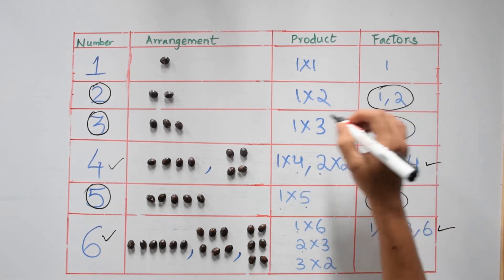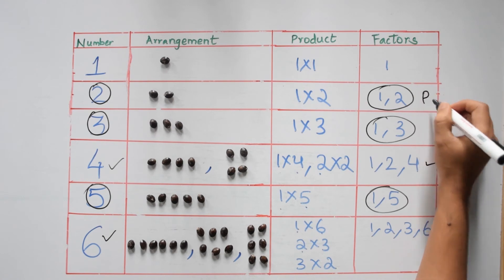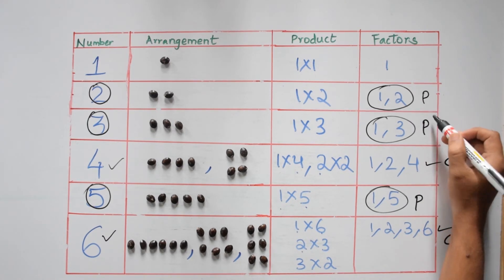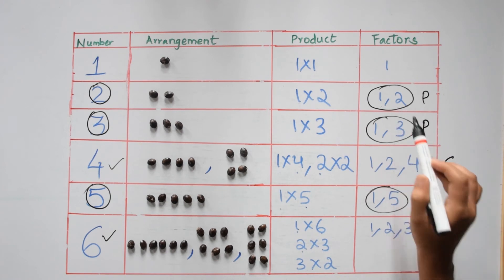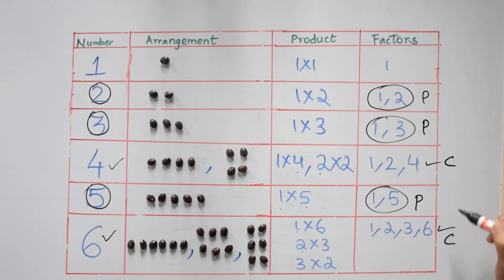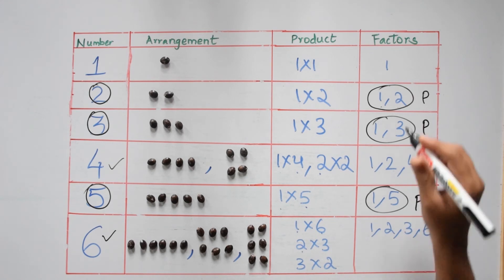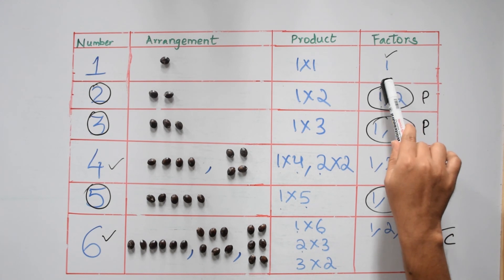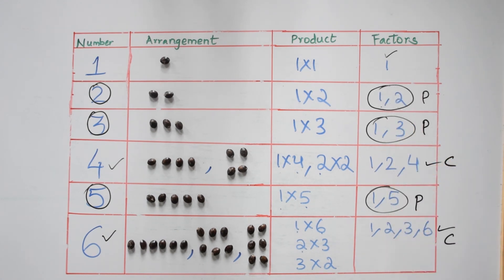From the previous video we already know that the numbers two, three, and five are prime numbers, and four and six are composite numbers. Now looking at this table we can conclude that prime numbers are the numbers which have only two factors, and composite numbers have more than two factors. Since one has only one factor, we can say it is neither composite nor prime.